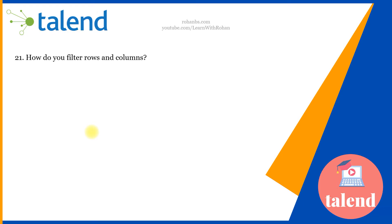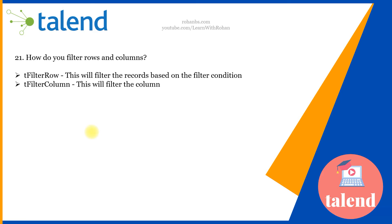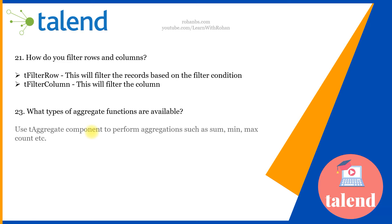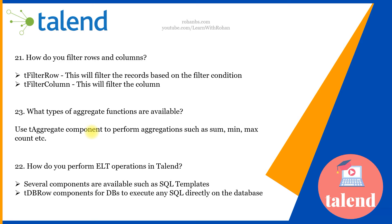The next question is how do you filter rows and columns. The filter row is basically used to filter the records based on the condition which you define in the filter section. Filter column will actually filter the column altogether and propagate the required columns to your next flow in the job.